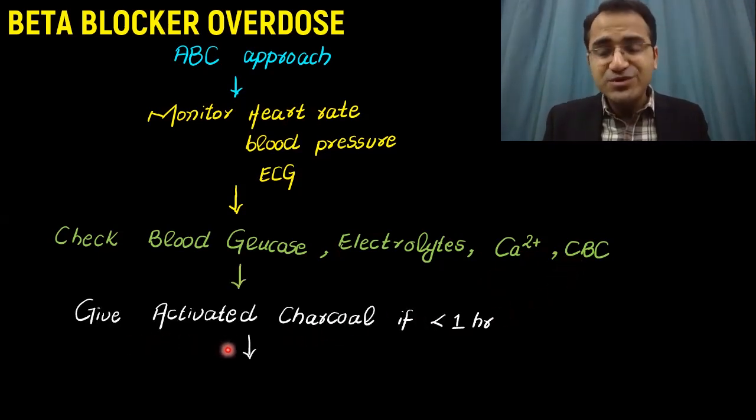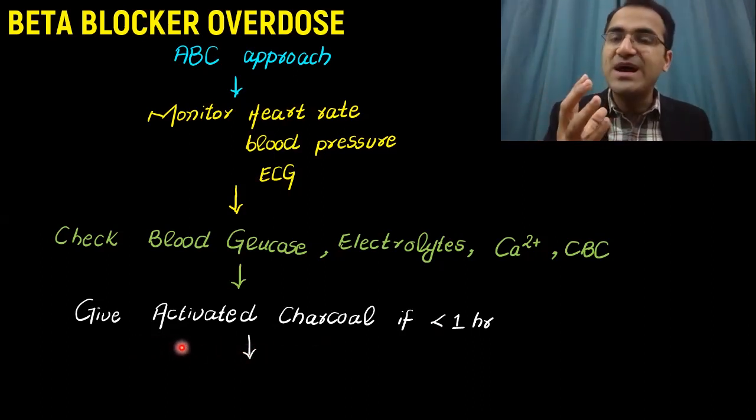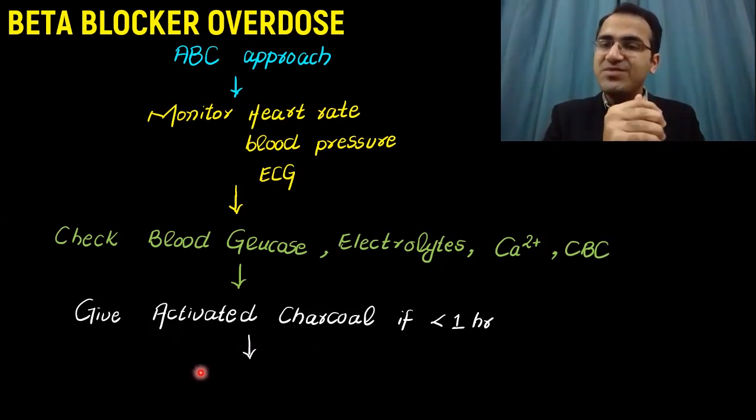If the patient presents within one hour of overdose with beta blocker, you can give activated charcoal. What activated charcoal does is that it binds the beta blocker and reduces their absorption in the blood.